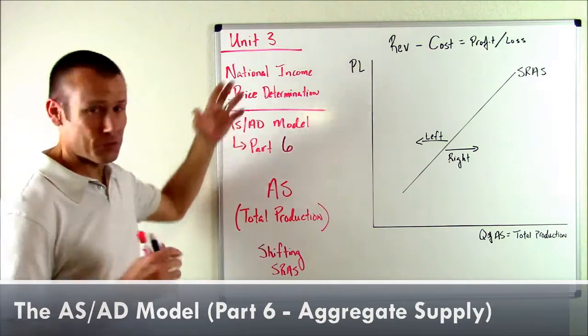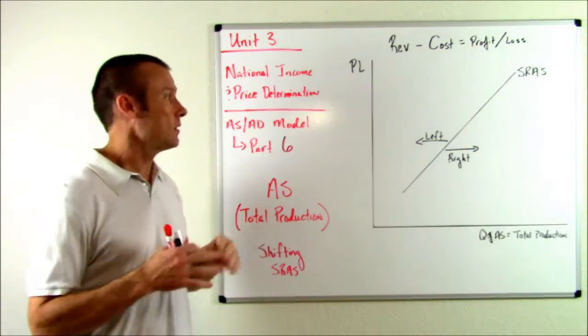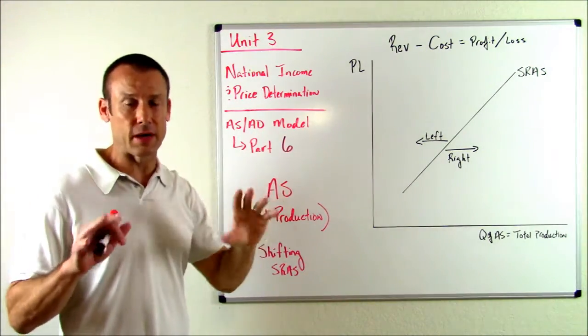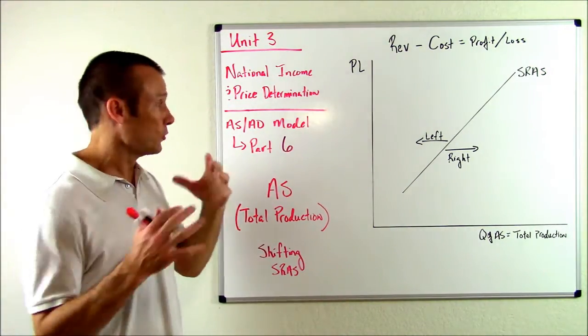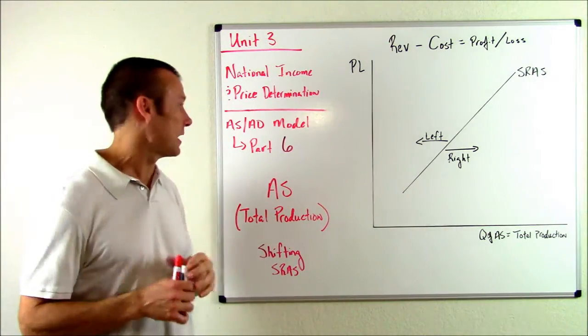Hey, everybody. We're back. We're on Unit 3. Once again, this is our National Income and Price Determination Unit. We're using our AS/AD model. Okay, it doesn't look quite like an AS/AD model yet, but it will soon to determine basically national income and prices in the economy.